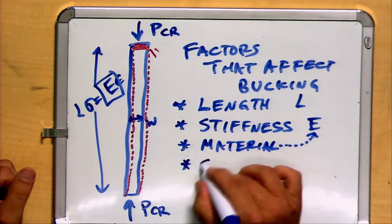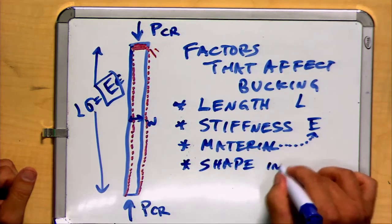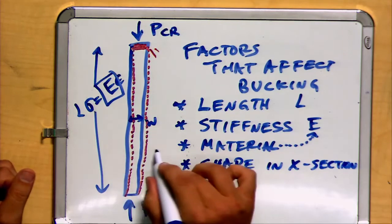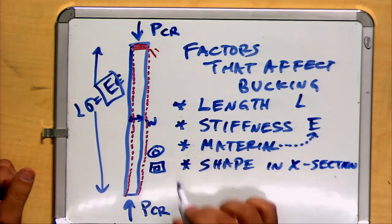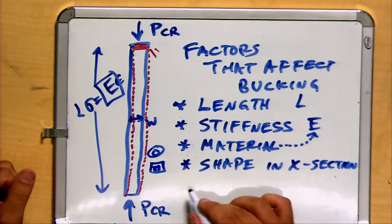Also, the shape of the material in the cross-section. What this shape looks like. Is it round? Is it shaped like a square? Is it hollow? What does the cross-sectional shape look like? And finally, how it's held at the ends.